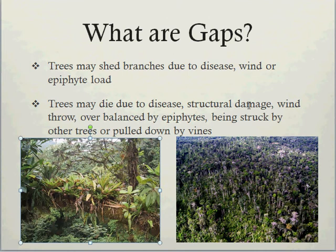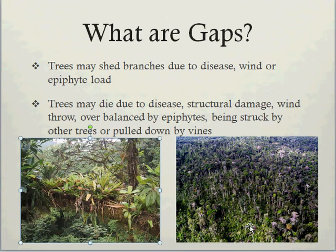Trees may also die due to disease, structural damage, wind throw, being overbalanced by epiphytes, being struck by other trees, or being pulled down by vines attached to other trees. When a tree dies and falls over, it leaves a gap in the canopy. Here is an example of a large area where trees have been knocked over, probably due to wind throw or a mini tornado going through. These mini tornadoes are not uncommon in tropical areas, and where they go through they will knock down trees, defoliate, de-branch, and basically open up gaps.